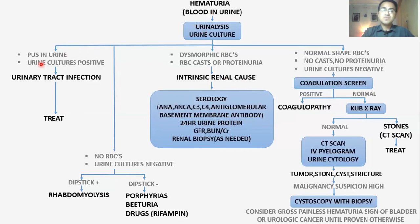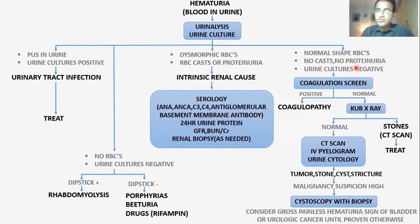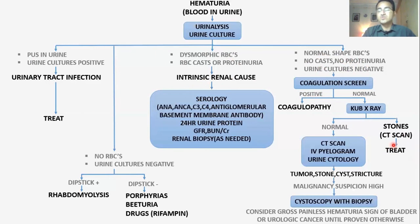In summary: when a patient presents with blood in urine, order urinalysis and urine culture. If pus and positive cultures are found, treat the infection. If you find dysmorphic RBCs, RBC casts, and proteinuria, it points to an intrinsic renal cause — work it up with serology, urine protein, GFR, BUN, and creatinine. If you find normal-shaped RBCs, no casts, no proteinuria, and negative cultures, go for a coagulation screen; if coagulopathy is found, treat it; if normal, proceed to KUB x-ray to look for stones.